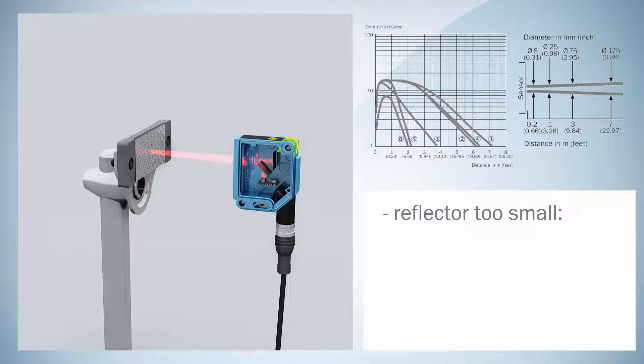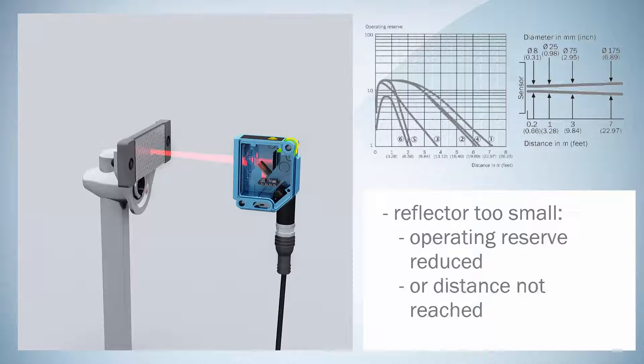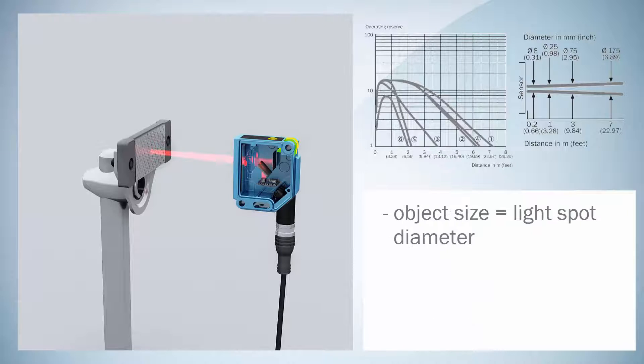If the reflector is too small, the operating reserve is reduced or the operating range cannot be fulfilled. Object size should preferably be the same as the light spot diameter.